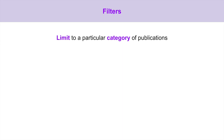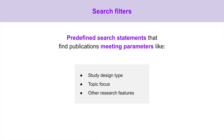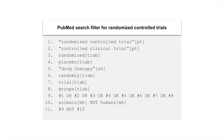The final building block is filters, which limit search results to a particular category of publications. When conducting a systematic review, avoid built-in database filters — in general, they pose risks of bias and error. On the other hand, search filters can be useful in a systematic review. They are predefined search statements that find publications meeting research parameters like study design type, topic focus, or other features. Here's an example of a search filter that retrieves publications that are randomized controlled trials.